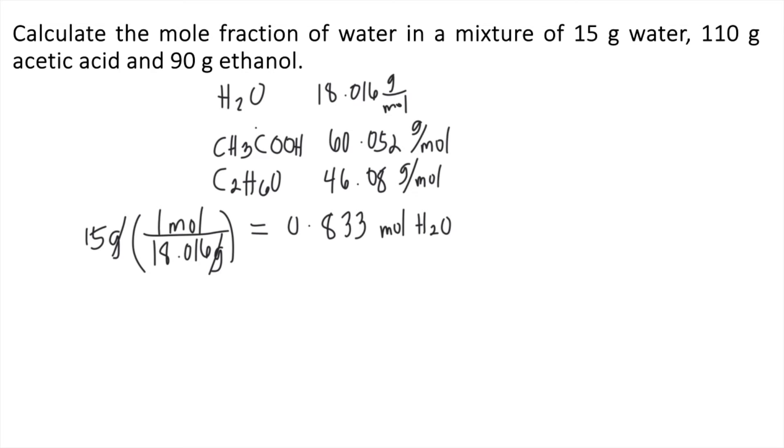Next is to solve the moles of acetic acid. In the problem, we are given 110 grams. Using the molar mass, one mole of acetic acid is equivalent to 60.052 grams. Grams will cancel out. So that's 110 divided by 60.052. That's approximately 1.832 moles of acetic acid.